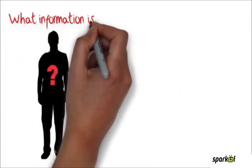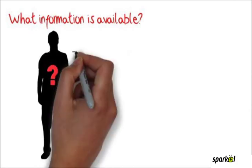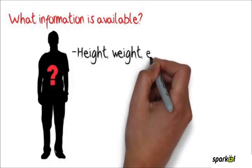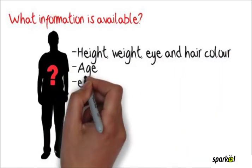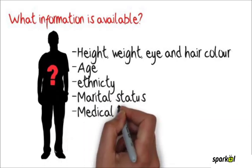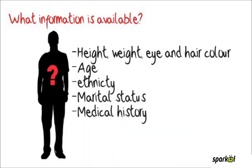The information the HFEA have collected about donors include their physical description, the year and country of their birth, their ethnicity, their marital status, their medical history, and any additional information the donors choose to supply.